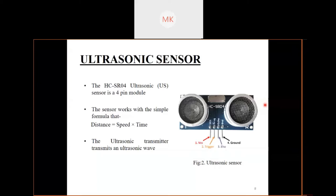After reaching a pre-specified value, the GSM module can give information to the authority. This reflected wave is observed by the ultrasonic receiver module. To measure the distance between the object and the sensor, we use the formula: distance equals speed multiplied by time. The ultrasonic wave has a universal speed of 330 meters per second.